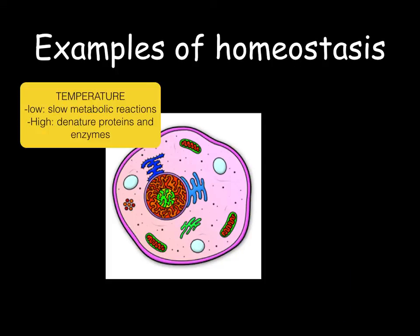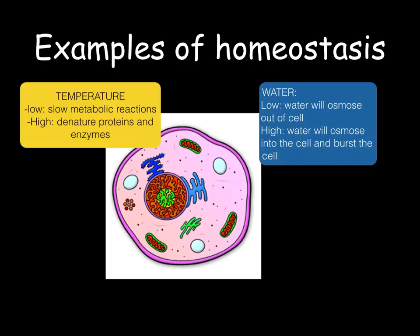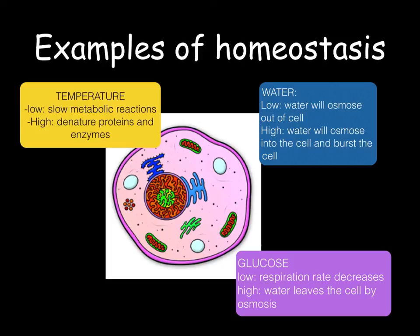Looking at temperature, a low temperature will slow metabolic reactions and a high temperature will denature the proteins and enzymes. For water, if you put a cell into a very concentrated solution, water will move from a high water potential in the cell out of the cell by osmosis. In a dilute solution, water moves into the cell and the cell will eventually burst. For glucose, a low concentration decreases the rate of respiration, whilst a high concentration causes water to be removed from the cell by osmosis.